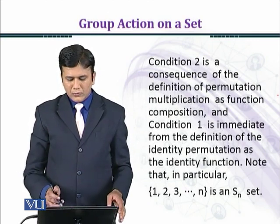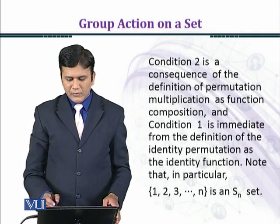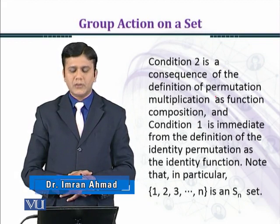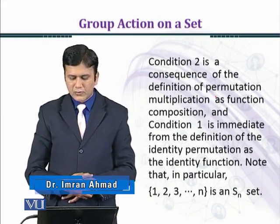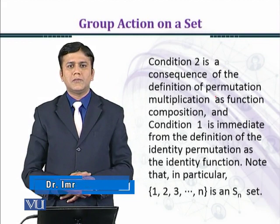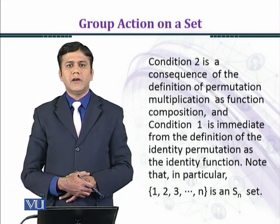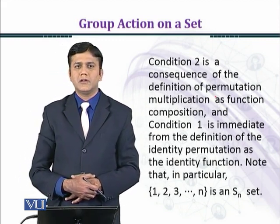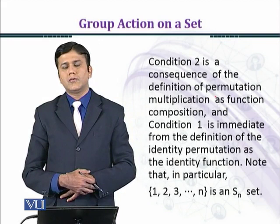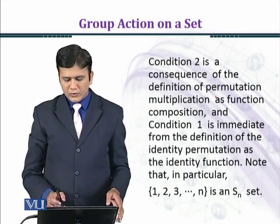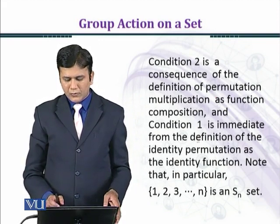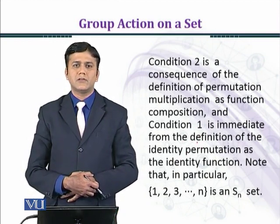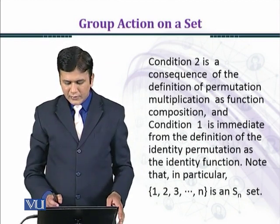Condition 2 of that definition is the consequence of the definition of permutation. We have seen that G1, G2, X is equal to G1 within bracket G2, X. Permutation multiplication is the composition of condition 2. Condition 1 is immediate from the definition of identity permutation. That is EX equal to X as the identity function.